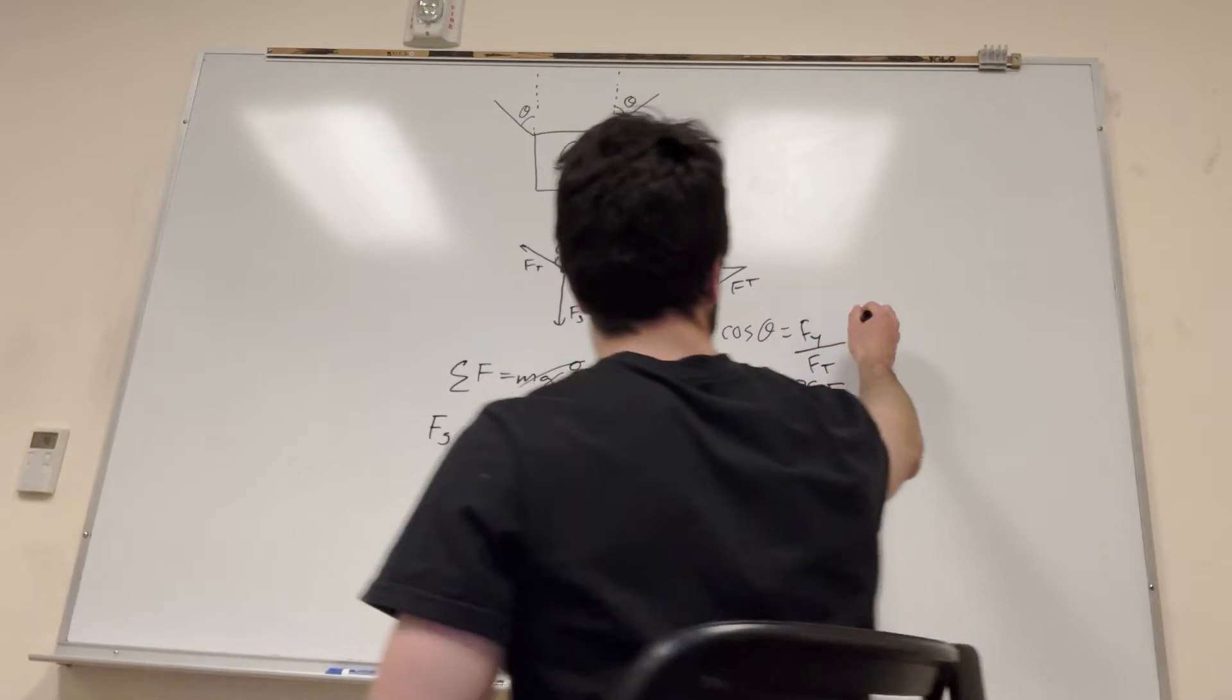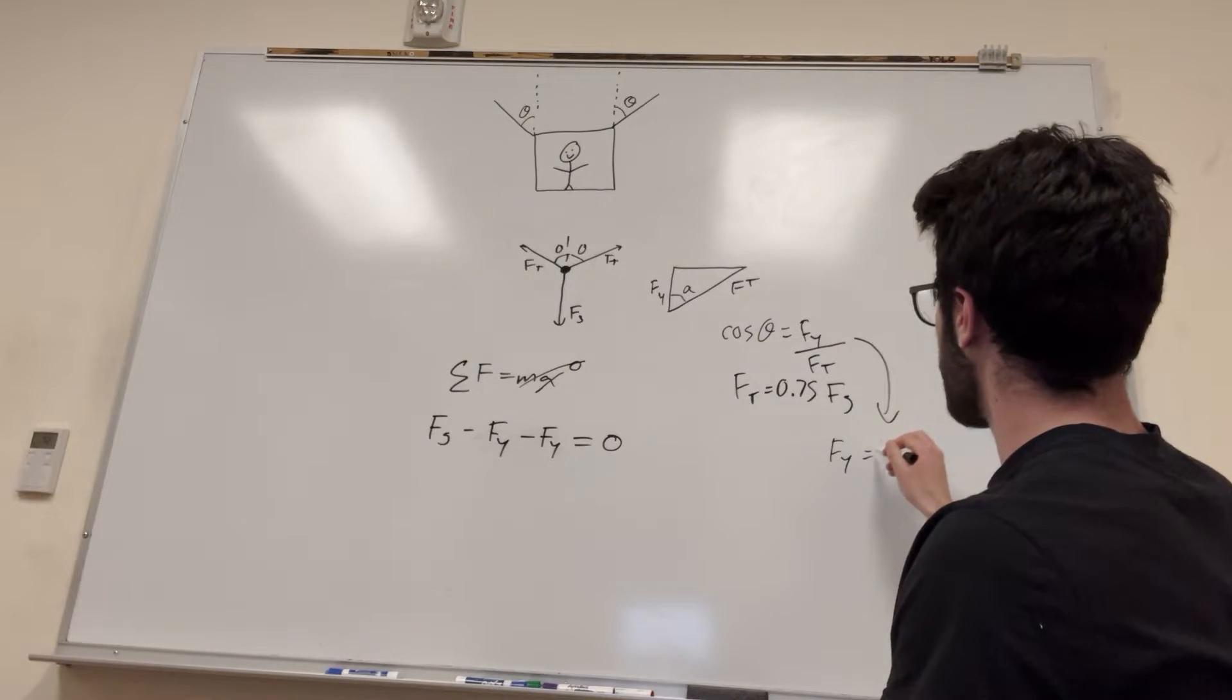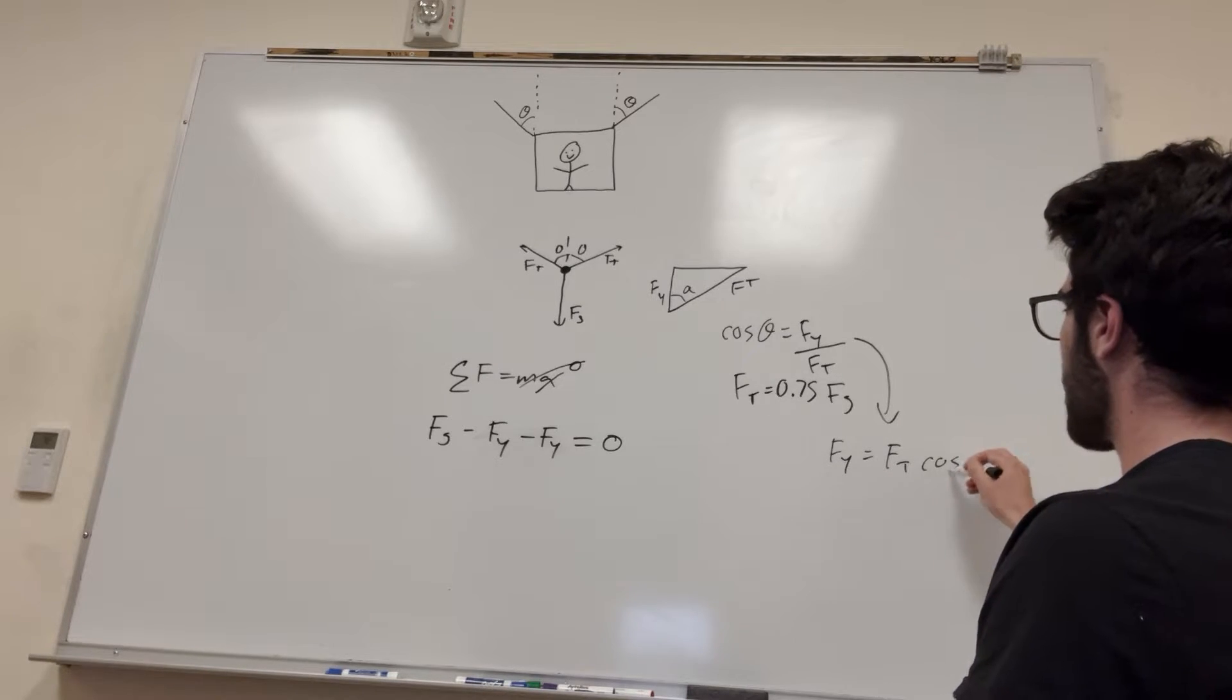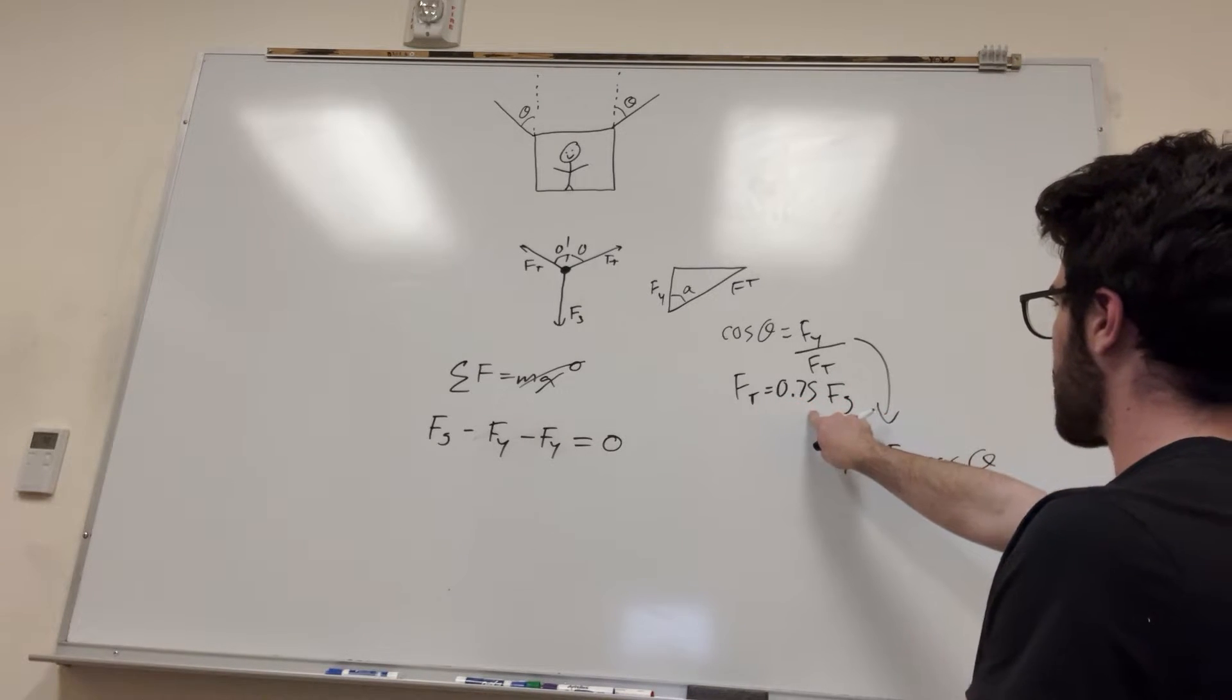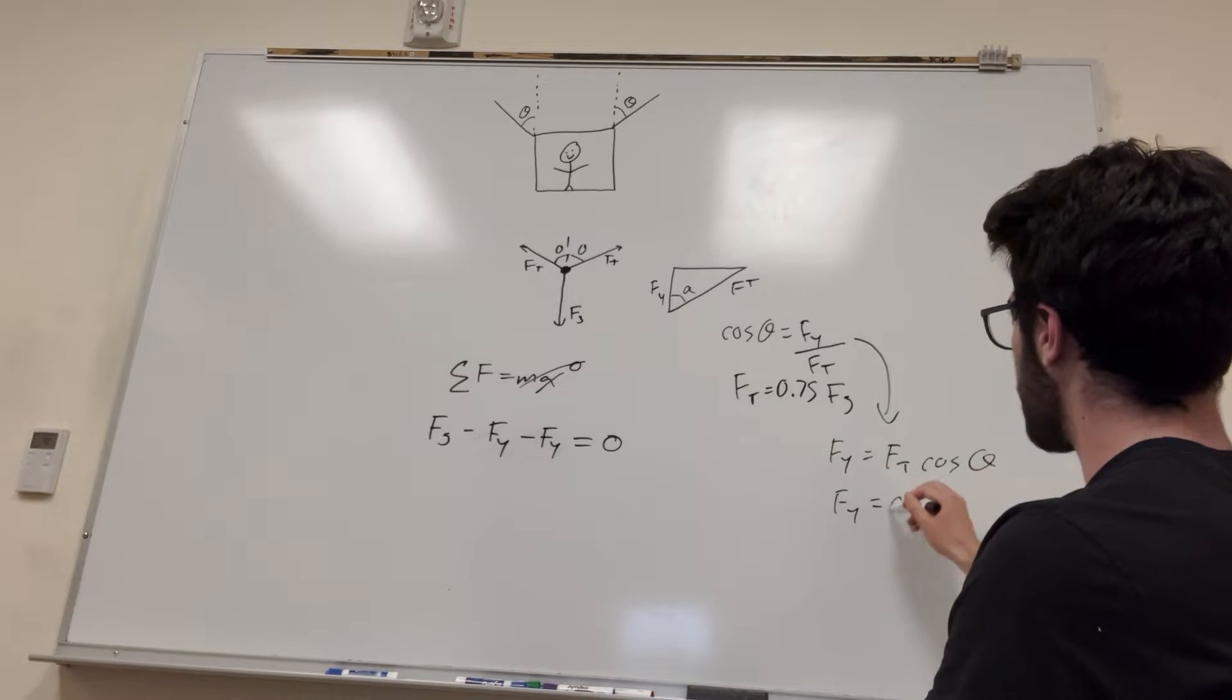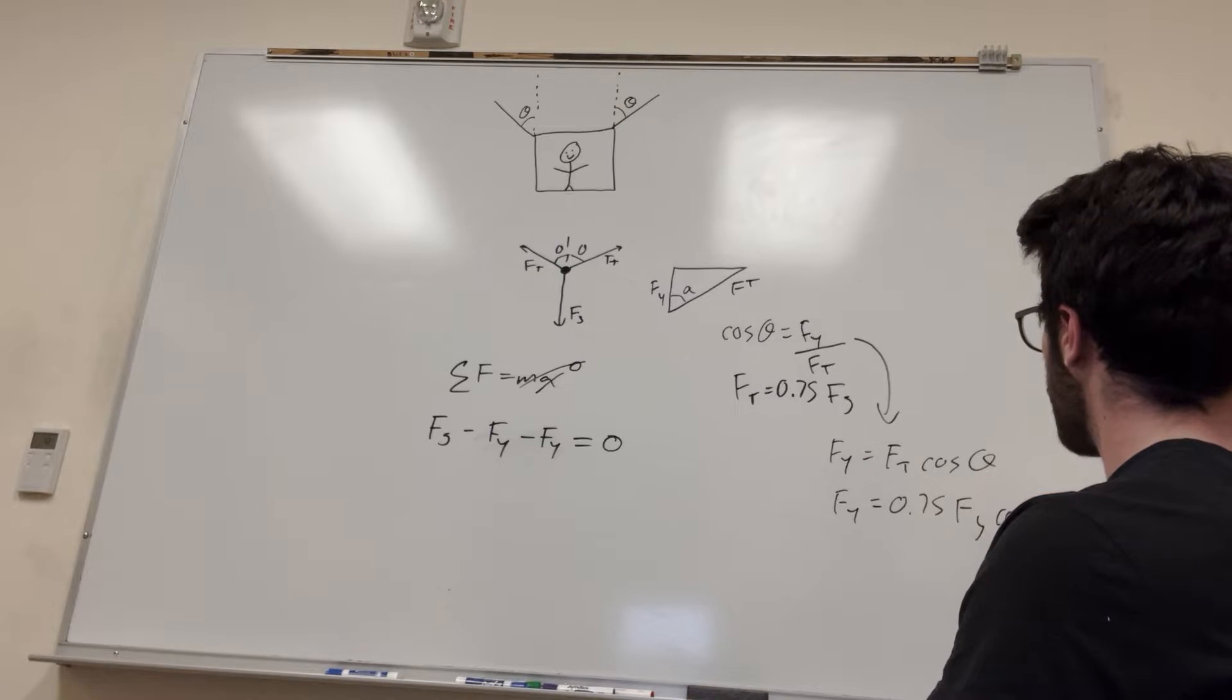So we go back to here. Force of y is equal to, multiply force of tension over, so force of tension times cosine of theta. We know that force of tension is 0.75 force of gravity, so force of y is equal to 0.75 force of gravity cosine of theta.